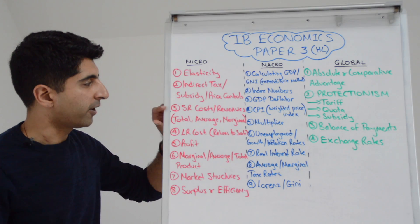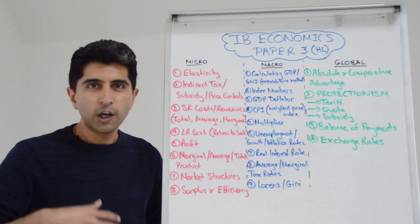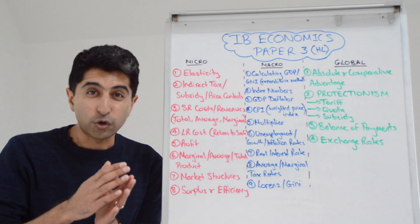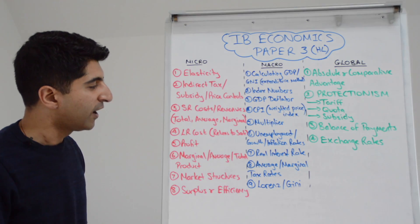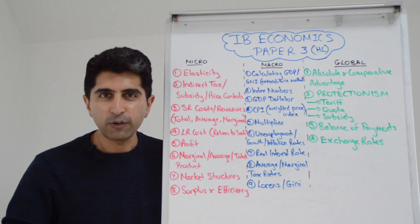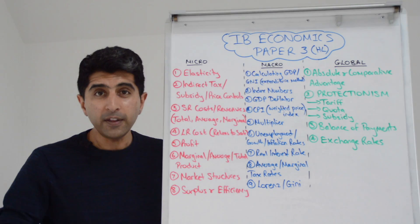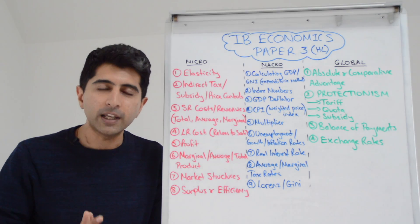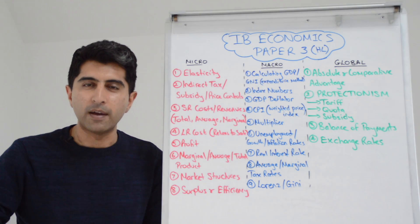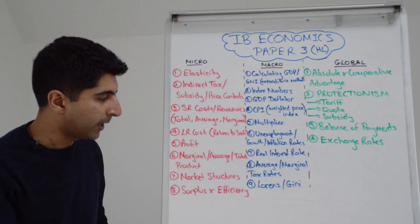Make sure you know those diagrams very well. Short run costs and revenues — all the key equations: total cost, average cost, marginal cost, same with revenues. Make sure you can calculate those and know the curves very well, linking to law of diminishing returns in the short run. In the long run, make sure you know how to calculate returns to scale. That could easily feature. Profit — the three different types of profit, how to calculate those from diagrams as well as from data, but also the conditions of profit max, revenue max, sales max. Know those objectives of firms very well.